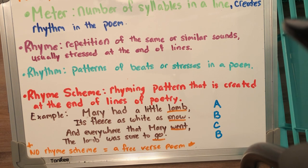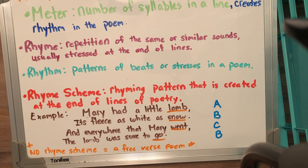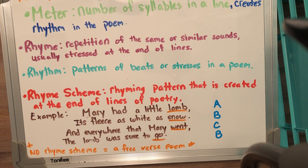There are different types of poetry. There's free verse, where it has no rhyme scheme. A haiku, which is a five, seven, five syllable type of poetry. An acrostic, there are shape poems where the poem actually makes out a shape. There are lyrical poems, ballads — a whole bunch of different types of poems. A lot of poems also include figurative language.